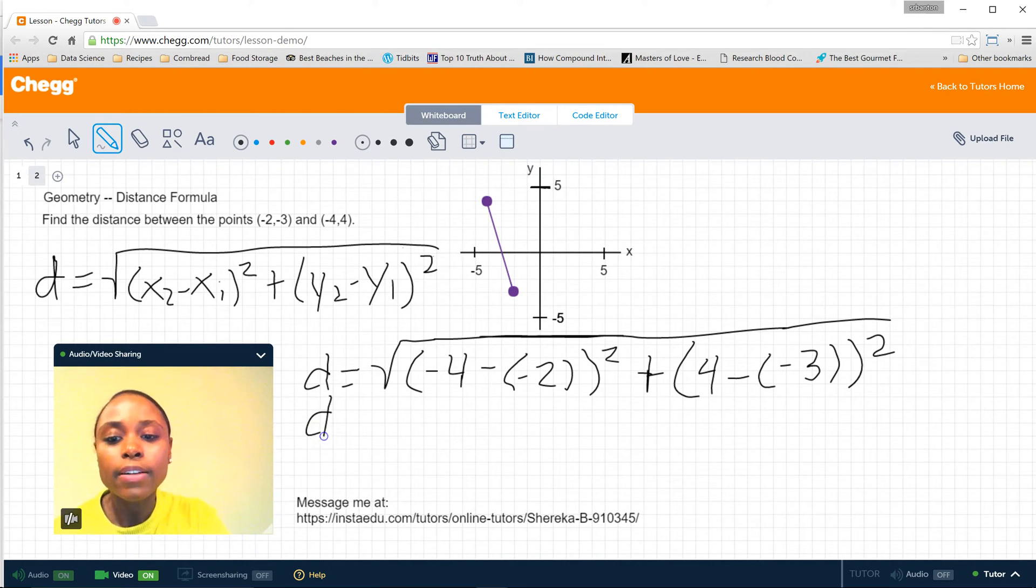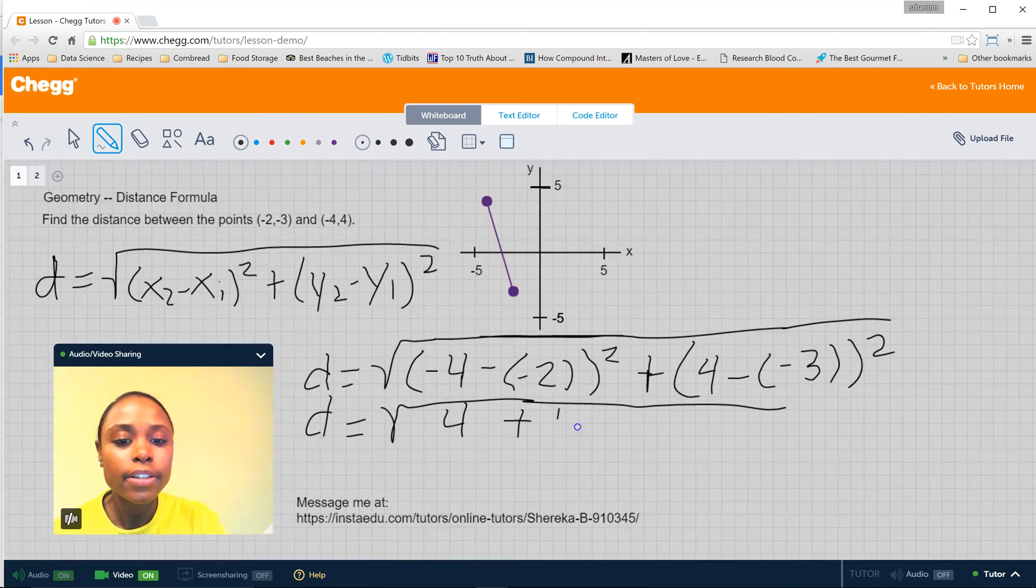So if we continue from this point on it's pretty much just simple math. So (-4) minus (-2) is (-2), so (-2) squared is 4. 4 minus (-3) is the same as 4 plus 3. 4 plus 3 is 7. 7 squared is 49.